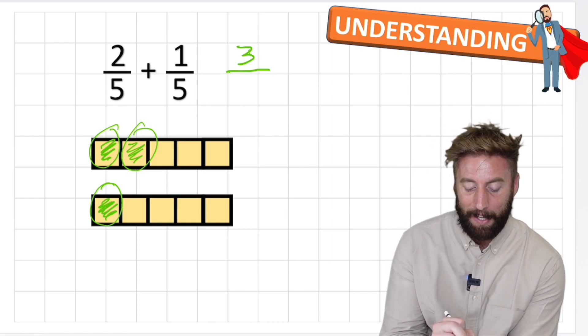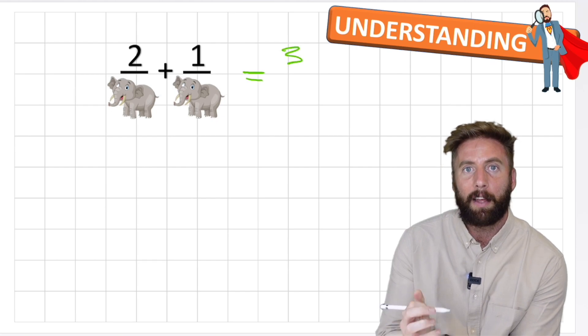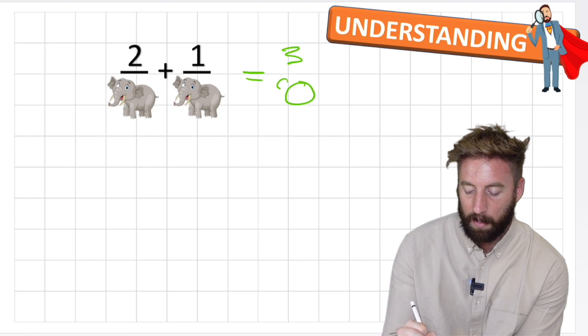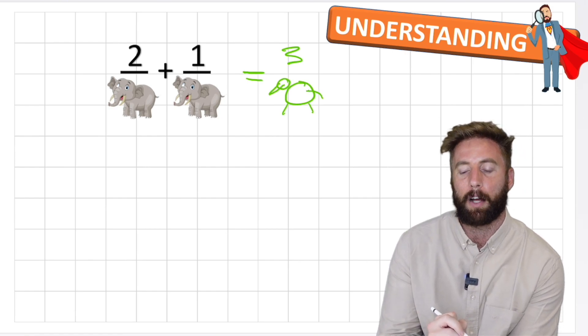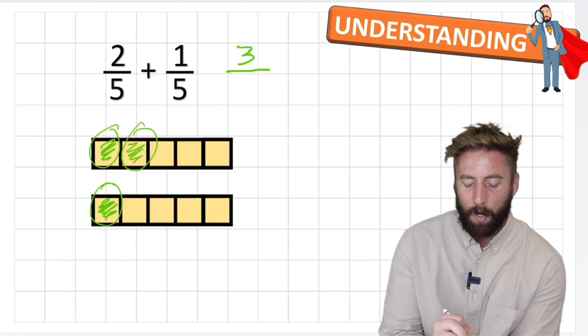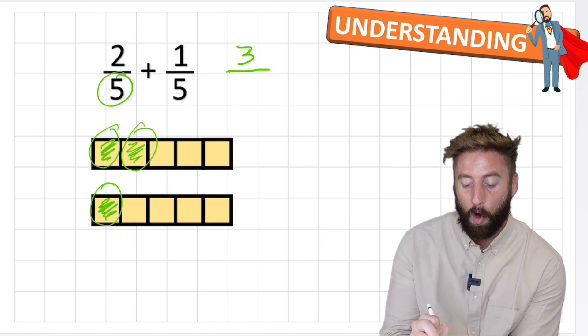Well let's think about it this way. If I have two elephants, add one elephant, I'm going to have three elephants. Let me draw an elephant for you, look at that, beautiful, I should be an artist.